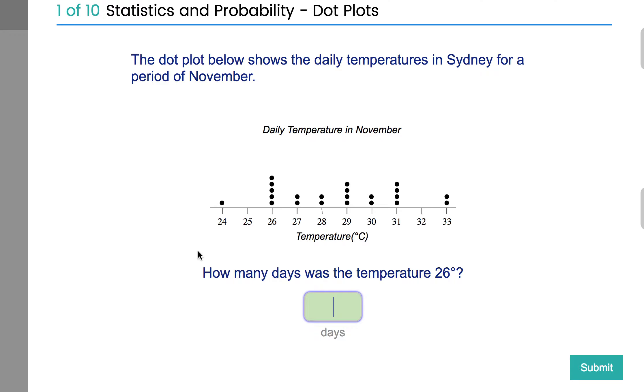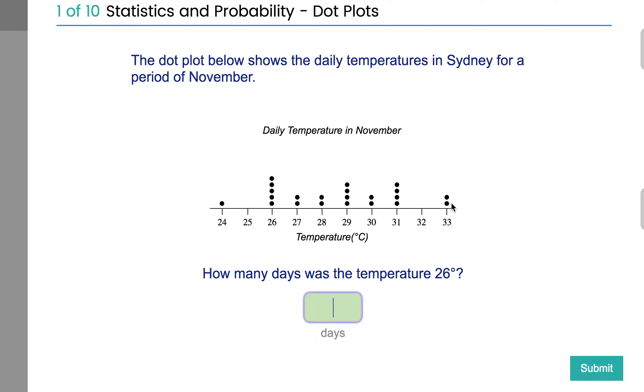This is a dot plot. It basically plots the results as dots. Every one of these dots is a result. In this case, it says daily temperature in November. These were the temperatures, and these were the days that had those temperatures.